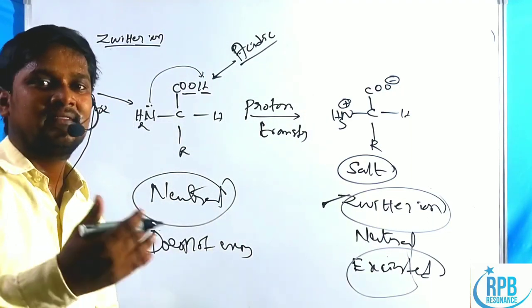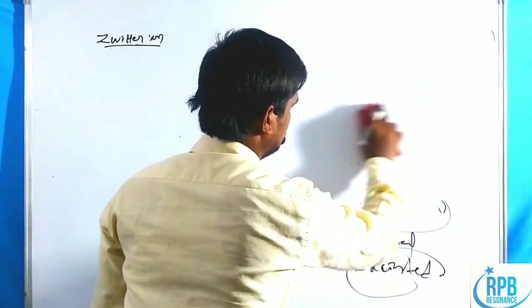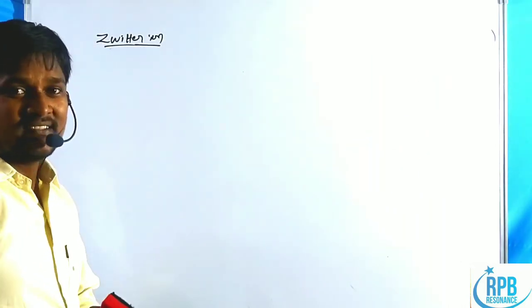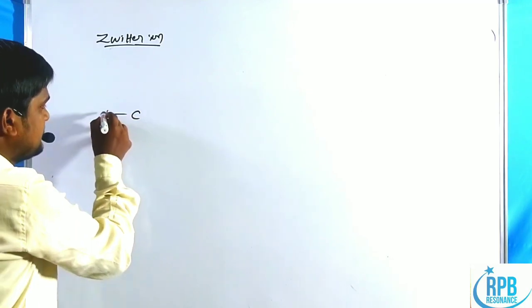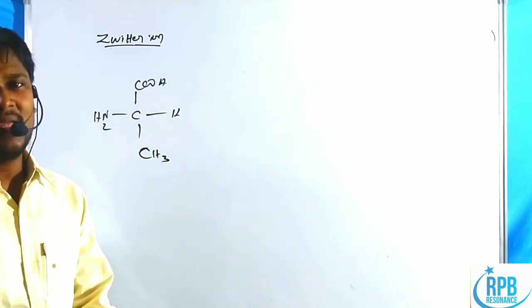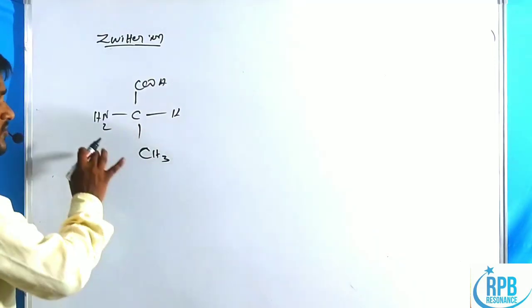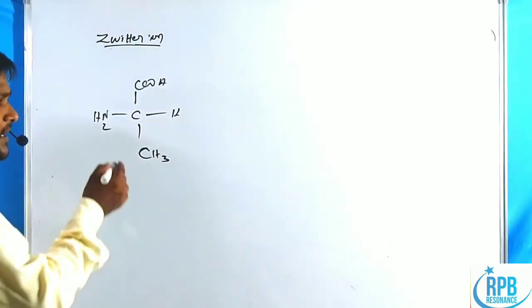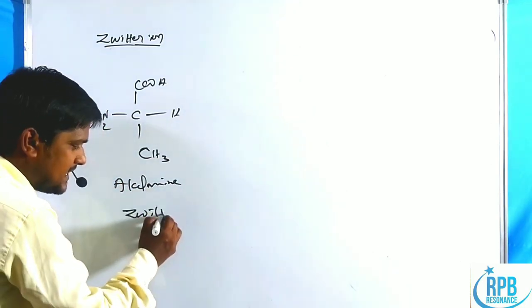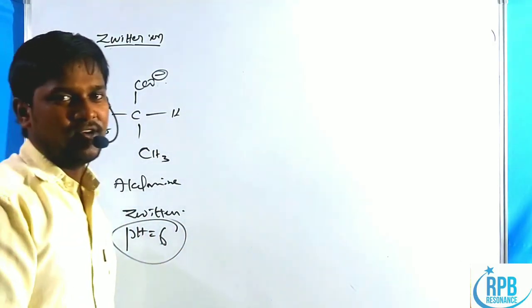The zwitterion generally forms three types of ions. Let us take alanine as our example: NH2, COOH, H, and CH3. The simpler amino acid is glycine (R = H); when R = CH3 it is alanine. In alanine, at approximately pH 6 — close to neutral — it exists as the zwitterion: NH3+ and COO−.